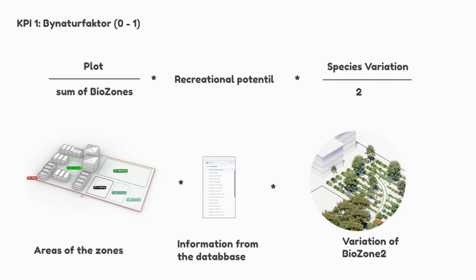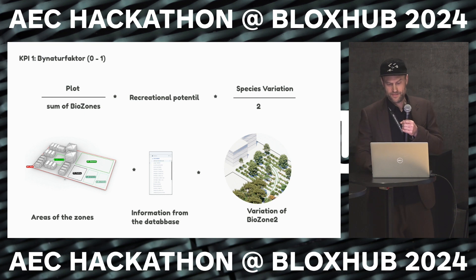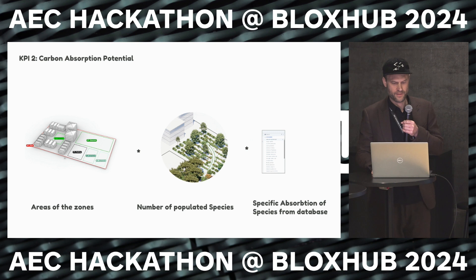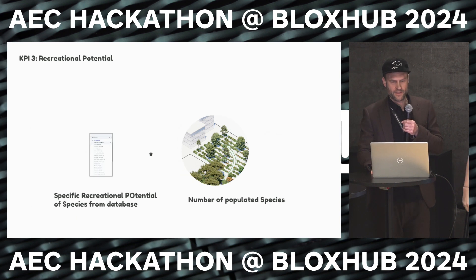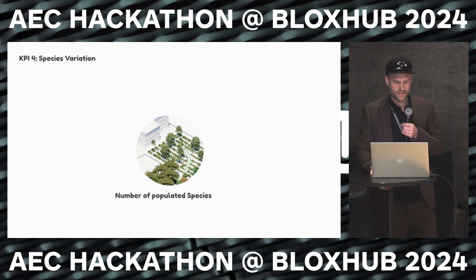We defined some KPIs. When we talked to the people from Contact Lab, they are actually figuring out right now how they can use all the data and make it comparable. So we are introducing the Buh-Natur-Factor — a mathematical equation related to the size of the biozones in relation to the plot, the recreational potential, and the variation of species. We're also looking at carbon absorption potential, recreational potential, and species variation. Most of this data was already in the dataset, but we had to be creative and add some things we needed but didn't have access to.